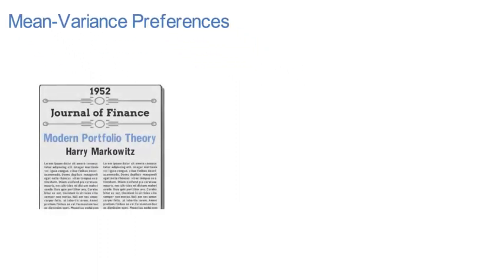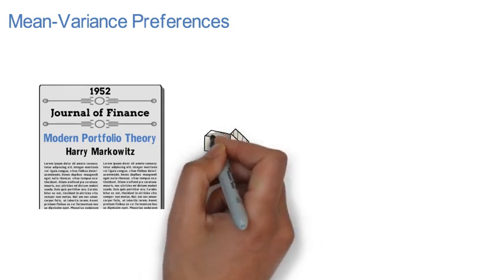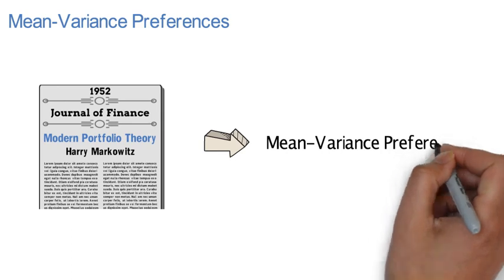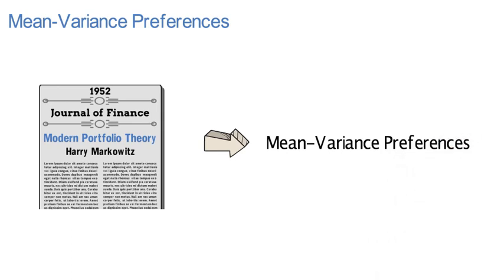The Markowitz approach to portfolio theory finds the optimal asset selection for an investor with mean-variance preferences. Mean-variance preferences are a very special class of preferences.